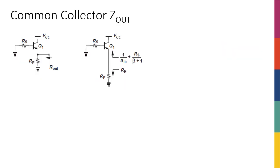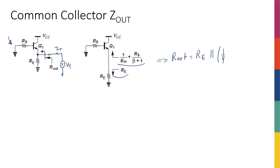How about the output impedance? We connect the input to ground, short the input, and apply a V-test / I-test. We don't really need to do KVLs and KCLs anymore — we can see it. Looking down, I'm going to see R_E. Looking up, I'm going to see 1/g_m plus whatever is in the base divided by (beta + 1), and these two are in parallel. Therefore, R_out is R_E in parallel with (1/g_m + R_S / (beta + 1)).